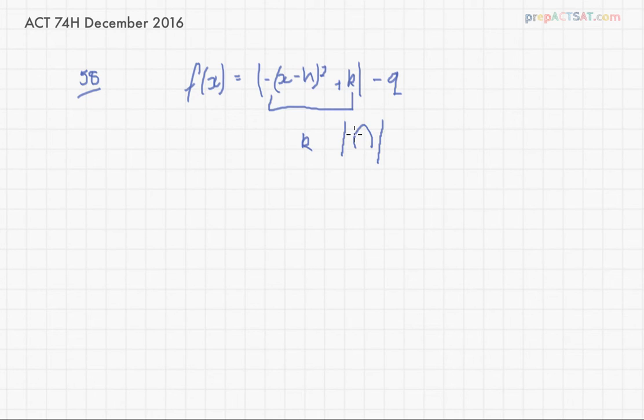So what that means is that any bits that are, let's draw ourselves an imaginary x axis here. Any bits that are below the x axis, it will flip above the x axis like this. So the final value that we get will be like this. Now then, after we've done that, it's asking us to move this down by q units.